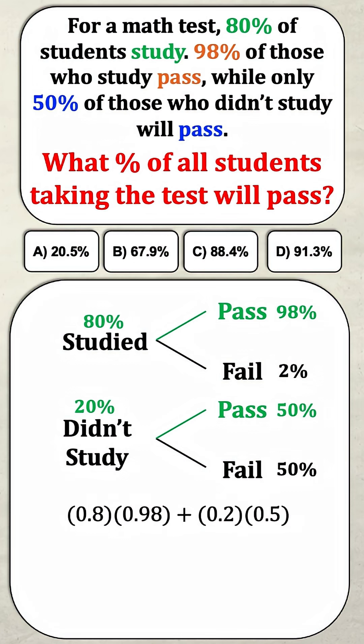We have 80% times 98% for the students who studied and passed, and then we add that to the students who didn't study and passed, which is 20% times 50%. Simplifying, that gives us 0.784 plus 0.1.